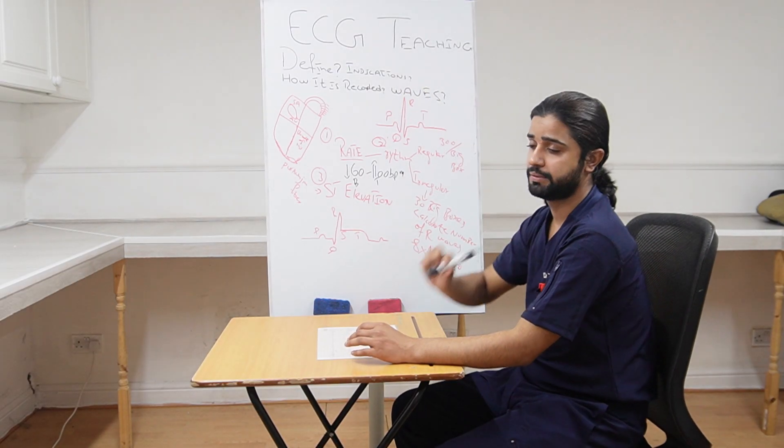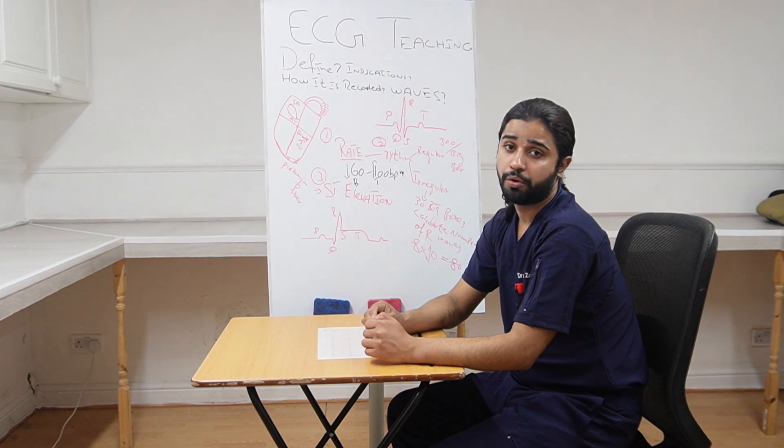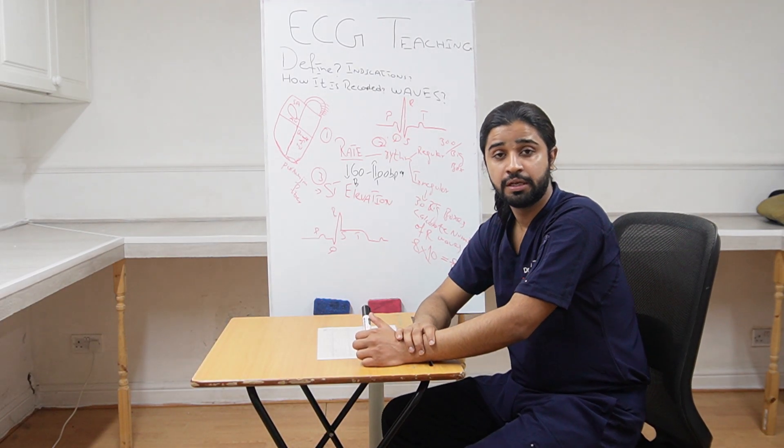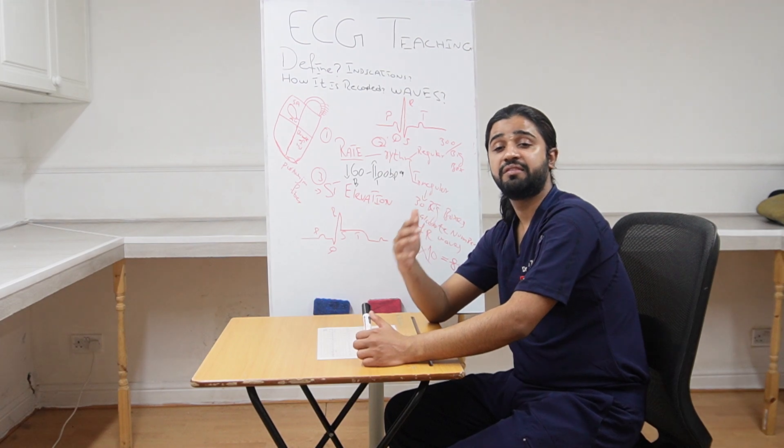Next, how it is recorded? So doctor, it is basically recorded by placing a few electrodes, six electrodes on the chest and four on the limbs. So basically it will be 12-lead ECG.